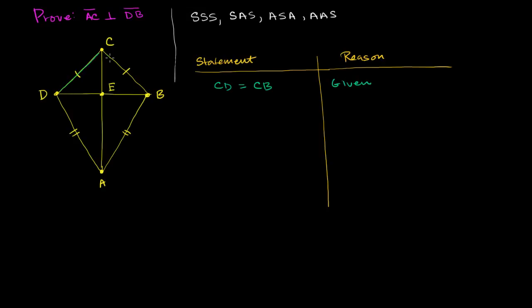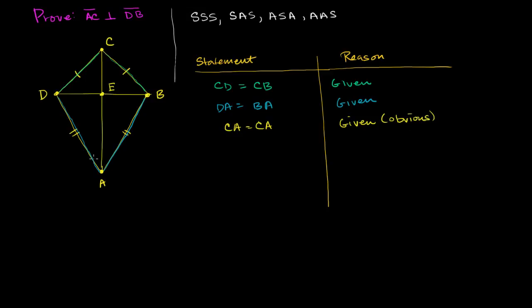We also know that CA equals CA — it's obvious from the diagram, since both triangles share that side. So we have two triangles whose corresponding sides all have the same length, and therefore we know they are congruent. Triangle CDA is congruent to triangle CBA, and we know that by the side-side-side postulate and the given statements.